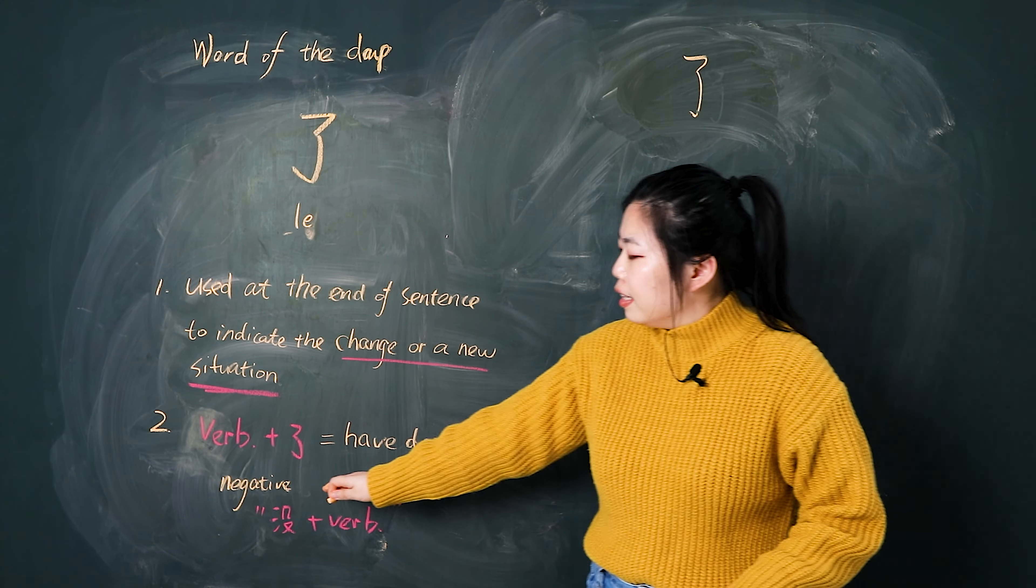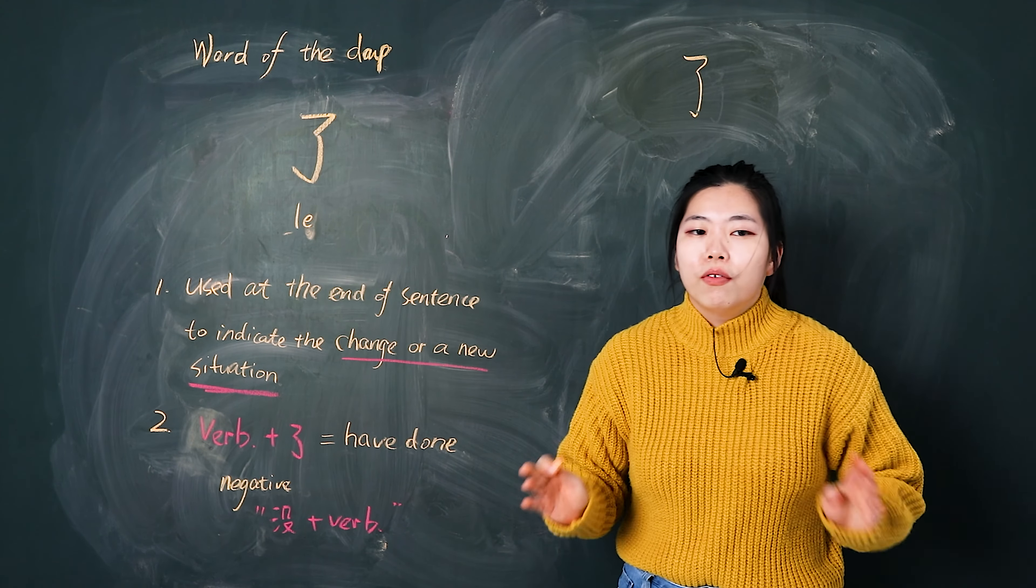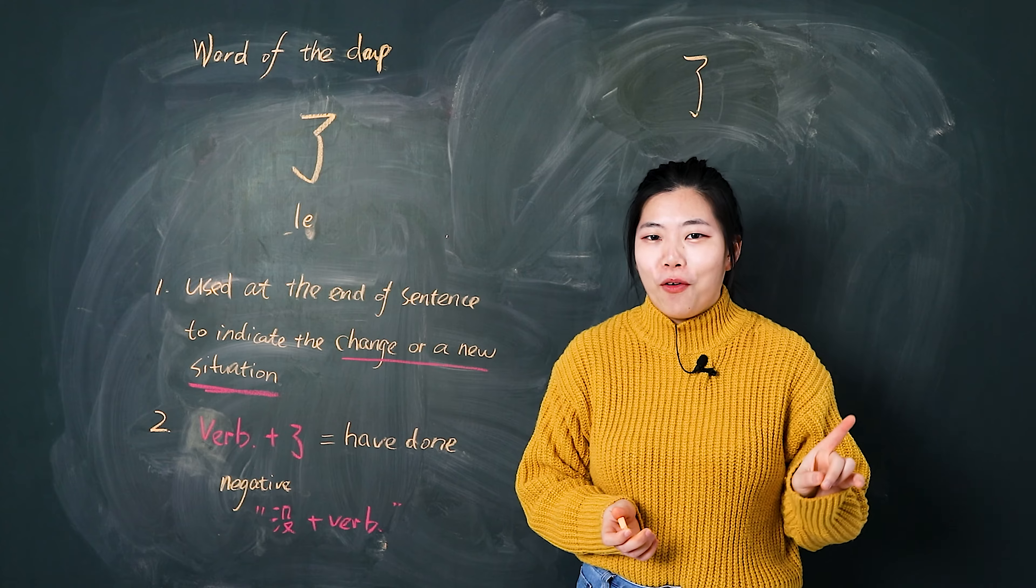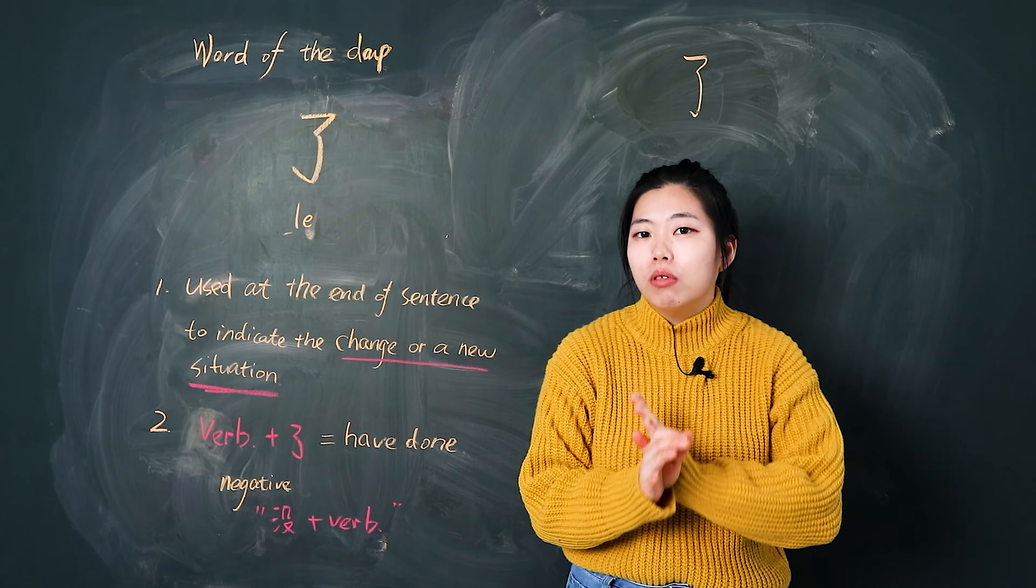我吃了饭. So, but the negative one is 没 plus a verb, no 了. For example, I have not finished my homework. 我没做完我的作业. No need for 了.